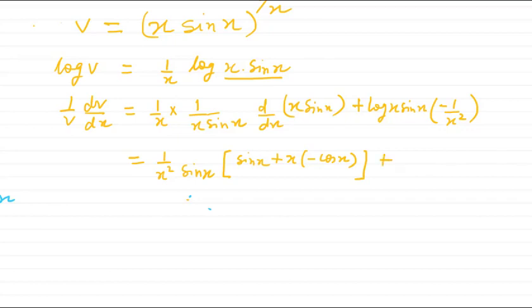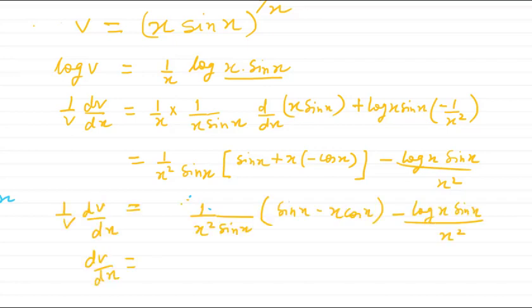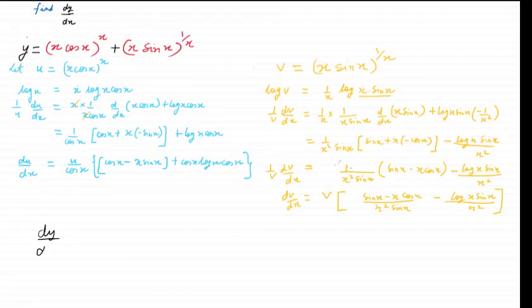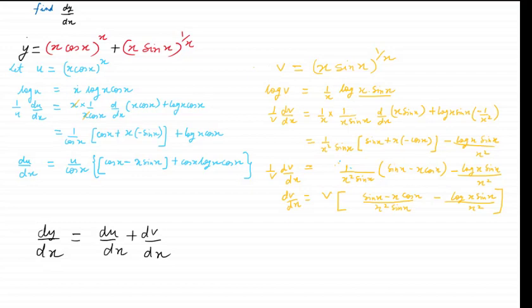This is the differentiation of that part, and for the next part we already have it, so it will be minus log(x·sin x) divided by x². So dv/dx equals v multiplied by all of this: (sin x − x·cos x)/(x²·sin x) minus log(x·sin x)/x². Now dy/dx equals du/dx plus dv/dx, so you can put those values in.